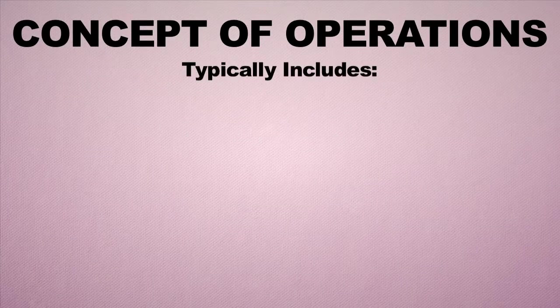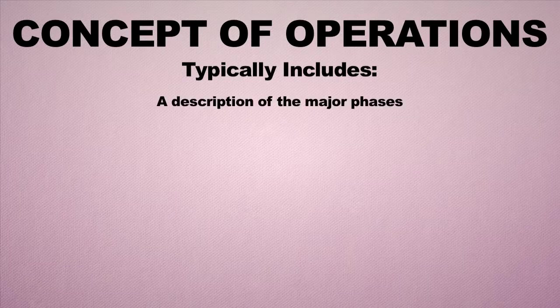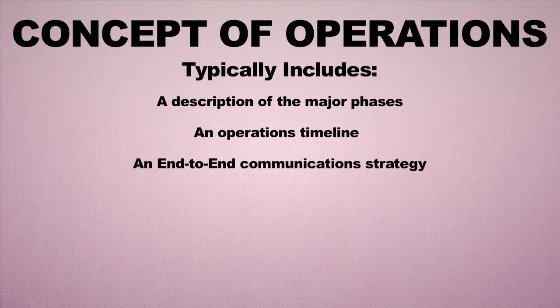Information typically found in a concept of operations includes a description of the major mission phases — for a NASA mission, things like launch, on-orbit operations, contingency or emergency operations, and science data return. It also includes an operations timeline from launch through the mission, and sometimes an end-to-end communication strategy describing how you will communicate back and forth, especially for spacecraft in space, across all phases of the mission.